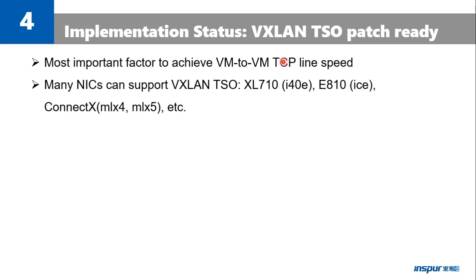For VXLAN TSO support, my patch is ready. VXLAN TSO is very important to achieve VM-to-VM TCP line speed. Many NICs can support VXLAN TSO — for example, Intel XL710, Intel E810, and Mellanox ConnectX.